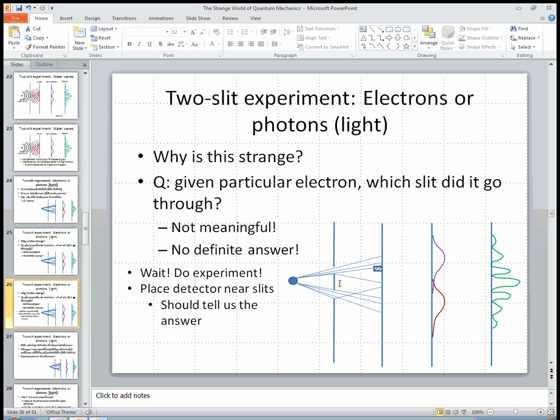Okay. Well, let's not just philosophize about it. Let's do the experiment. Let's see if we can figure it out. Let's place a little detector near this slit and maybe another detector near this. We only need one, really. We'll place a little detector near this slit and see it and observe it as it goes by. Okay. That should tell us the answer to this question.